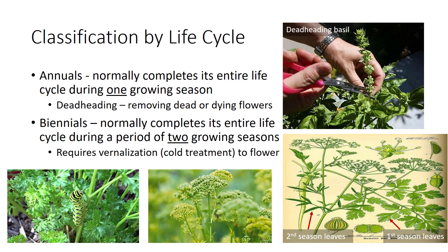Biannuals are plants that complete their life cycle in two growing seasons, such as carrots, parsley, and celery. Vegetable biannuals are harvested like annuals because we eat the storage organ — if you leave carrots in the ground for two years, they will be woody and disgusting. Biannual plants require a vernalization period, which refers to using cold treatment to induce flowering. For example, parsley looks normal the first season, but the next year the leaves totally change shape and it flowers.